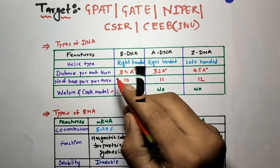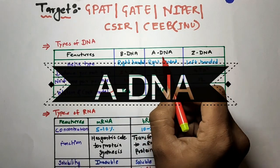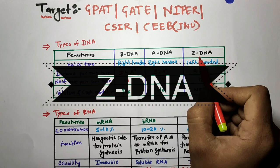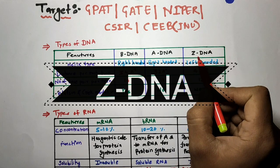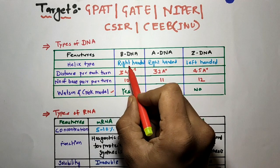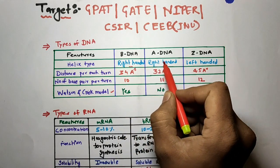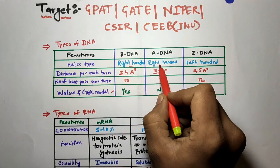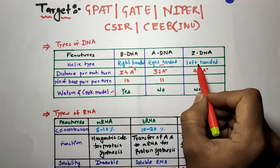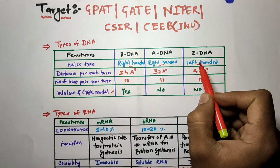There are three types of DNA: the first one is B-DNA, the second one is A-DNA, and the third one is Z-DNA. B-DNA is a right-handed helix type, A-DNA is also a right-handed helix type, and Z-DNA is a left-handed helix type.